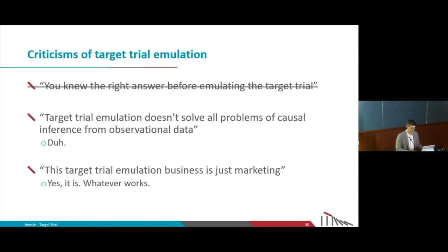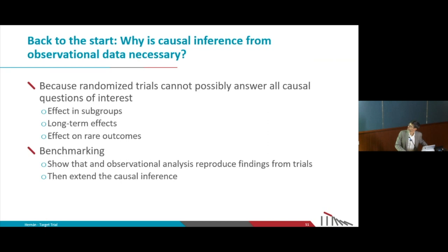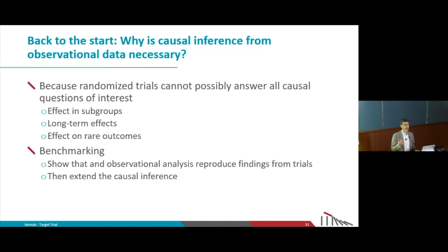So going back to the start: why is causal inference from observational data necessary? Because randomized trials cannot answer all questions. For example, we are not going to be able to use trials to estimate precisely the effects in subgroups defined by age, sex, or hypertension. We're not going to be able to use many trials to estimate long-term effects or effects on rare outcomes because sample size is not large enough. One goal of causal inference from observational data is to extend the results from trials.